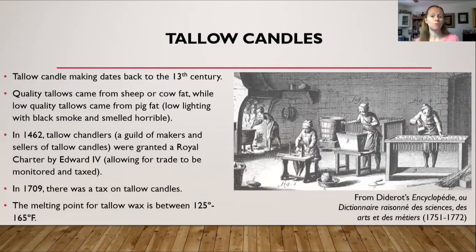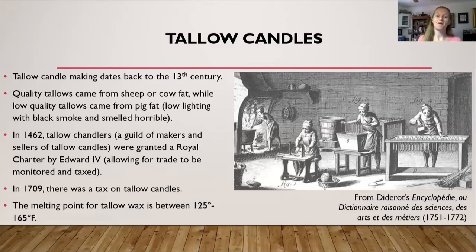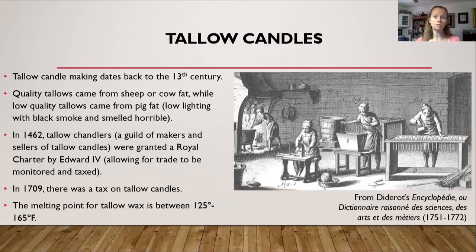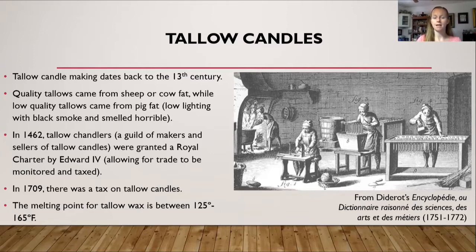So if you were able to afford candles, your options were tallow candles or beeswax candles. Tallow candles are made from animal fat, and beeswax candles are made from beeswax. Research shows that tallow candles have existed since at least the 13th century. Quality tallow candles came from either sheep or cow fat; lower quality tallow candles came from pig fat. Tallow candles are similar to rush lights in that they're also dipped in animal fat, but they provided more light because there is more wax.